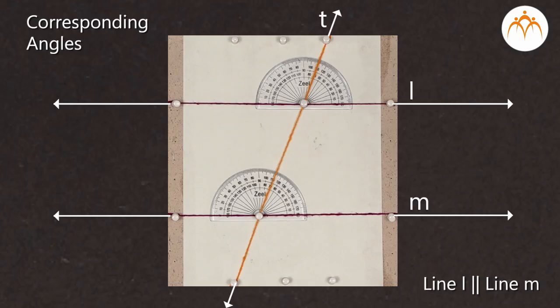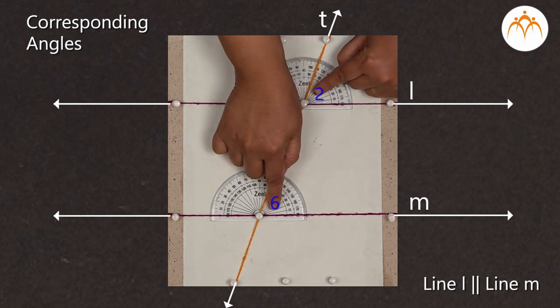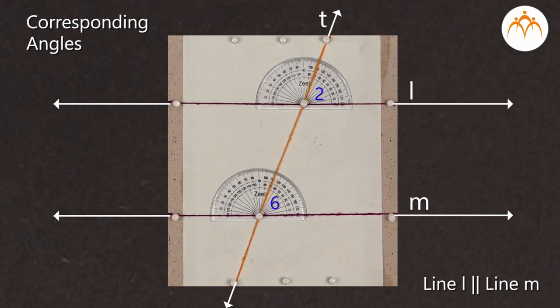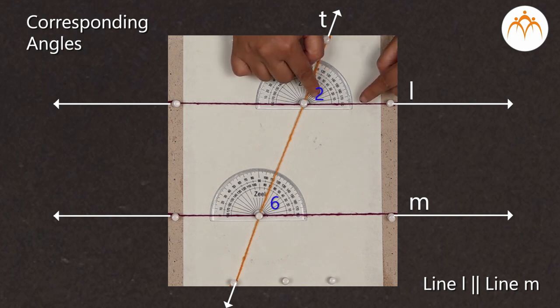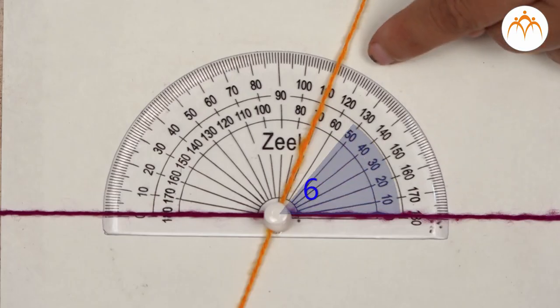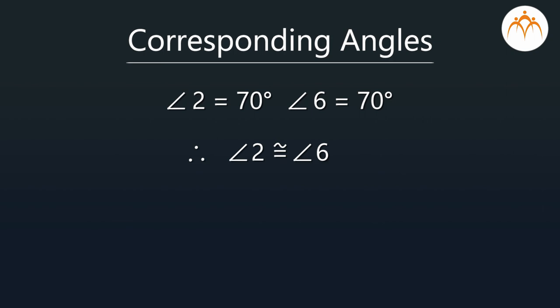Now let us see the second pair of corresponding angles — angle 2 and angle 6. Angle 2 and angle 6 get formed at these matching corners, so these two angles are called corresponding angles. Let us measure these angles. Angle 2 measures 70 degrees and angle 6 also measures 70 degrees. So the measure of angle 2 is equal to angle 6, and we can say that angle 2 and angle 6 are congruent to each other.